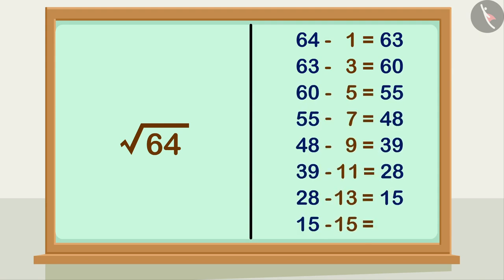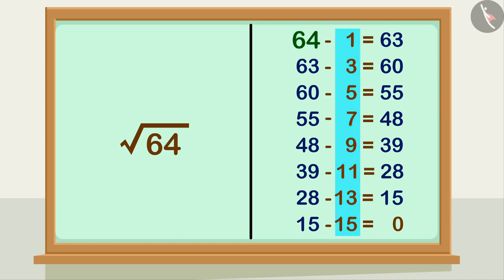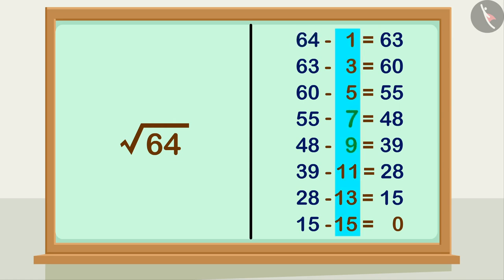We saw that by subtracting the first eight consecutive odd numbers from 64, we get zero at the end. This shows that 64 is a perfect square number, and because we get zero by subtracting eight consecutive odd numbers, the square root of 64 is 8.